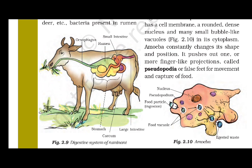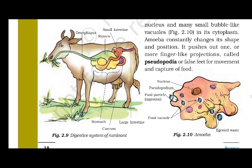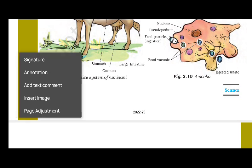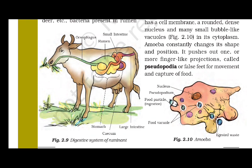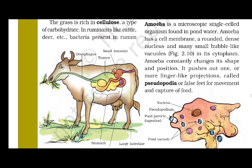Amoeba constantly changes its shape and position. It pushes out one or more finger-like projections called pseudopodia, or false feet, for movement and capture of food. Through these pseudopodia it engulfs food particles and ingests them. Once digested, the waste is released — these structures are called food vacuoles, as you can see in the diagrams.